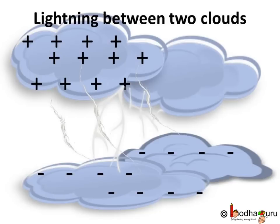When too much charge gets accumulated, air cannot resist their flow. Negative and positive charges meet, producing streaks of bright light and sound. We see these streaks as lightning. The process is called an electric discharge. This discharge of static electricity can take place between two charged regions of the same cloud, or different clouds, or even between cloud and earth.